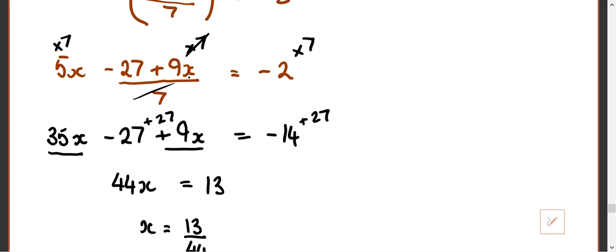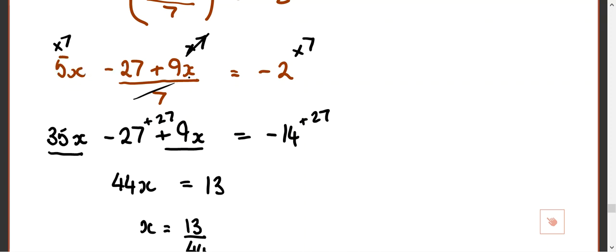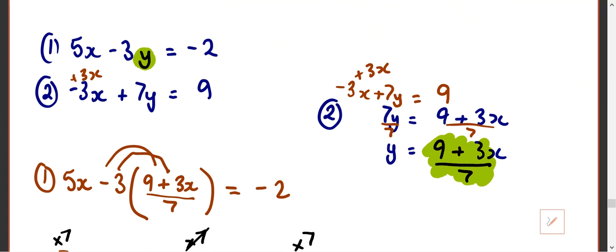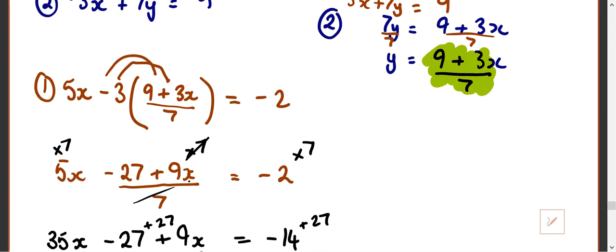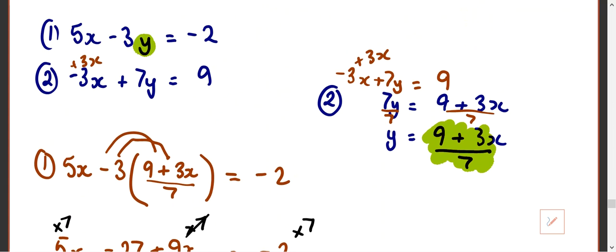So what we do is we try and simplify the fraction that we can. Can we simplify 13 with 44? No. 13 is a prime number, so 44 doesn't divide by 13. We still need to find y though, so we're going to do that in exactly the same way. Which one would you prefer to use?